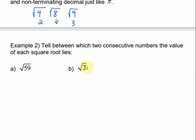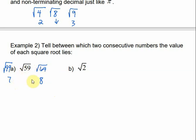For 59, let's think of some perfect squares that are close to 59. A perfect square bigger than 59 would be 64 — the square root of 64 is 8. A perfect square smaller than 59 would be 49 — the square root of 49 is 7. So we know that the square root of 59 would be 7 point something. The two consecutive numbers — they have to be one right after the other — are 7 and 8.